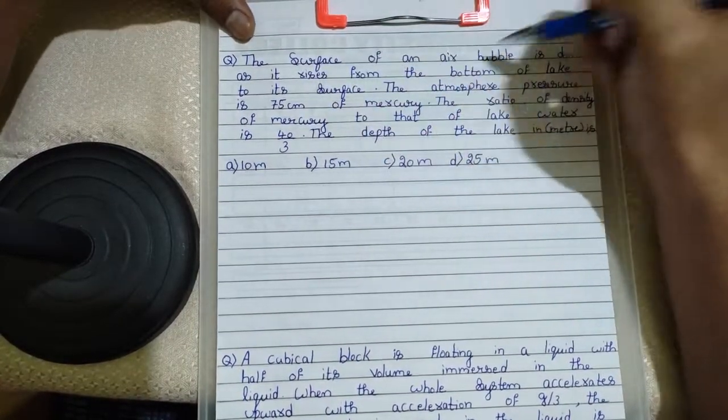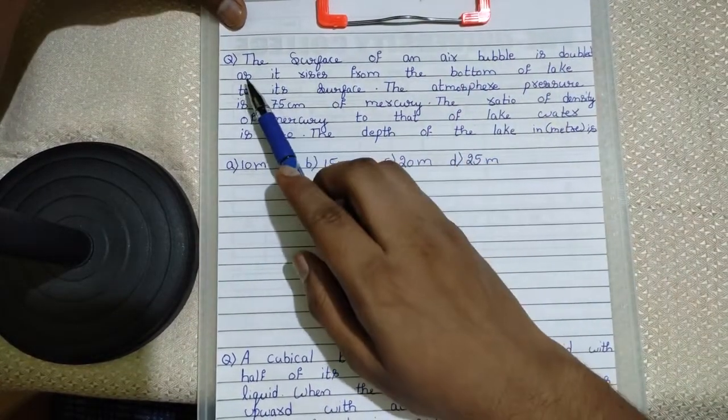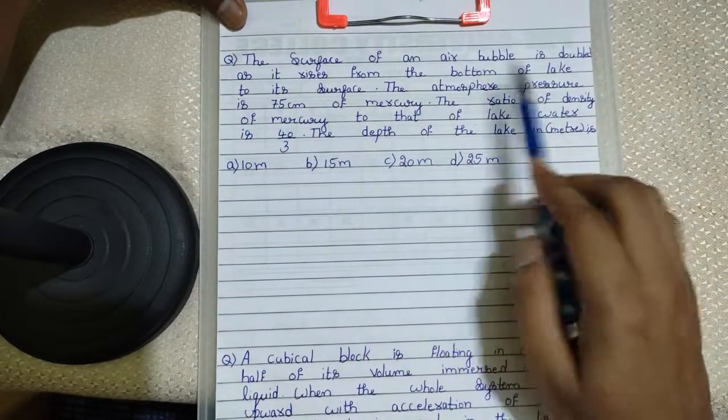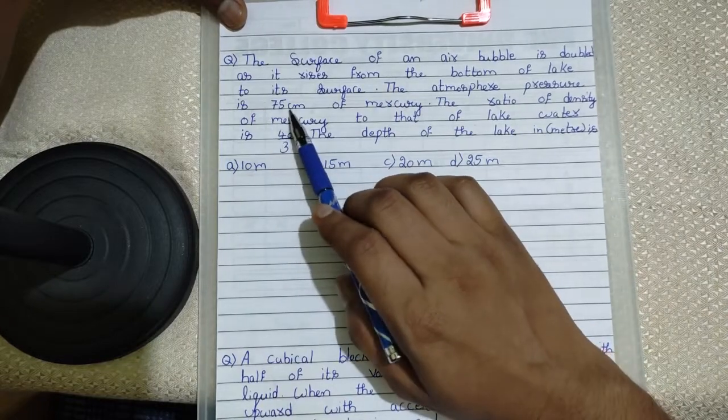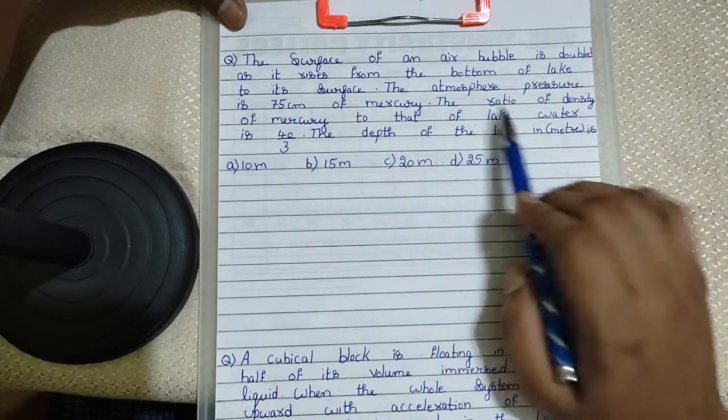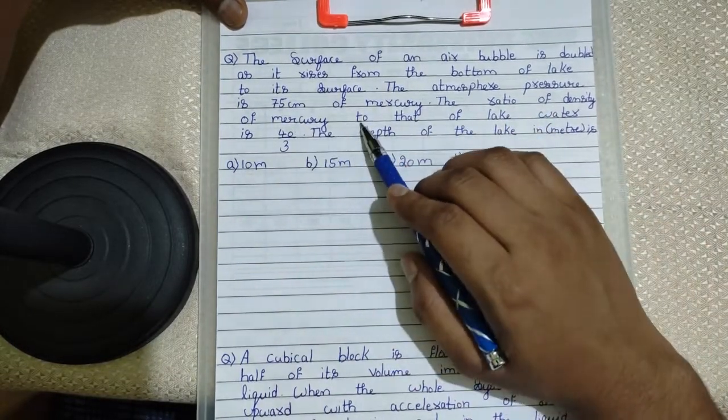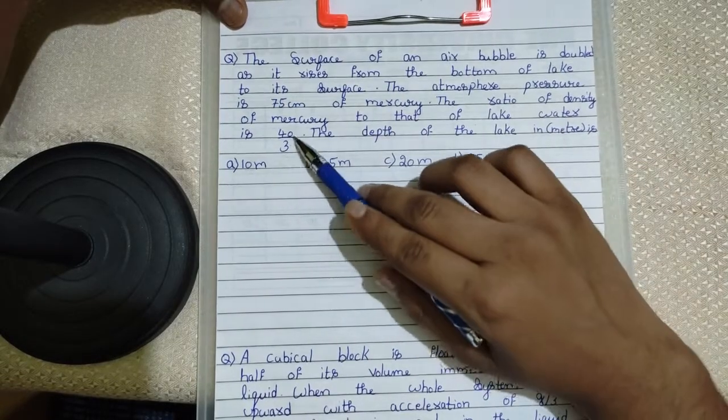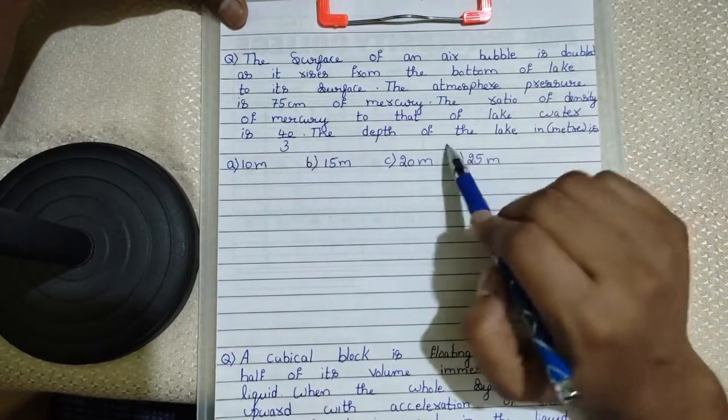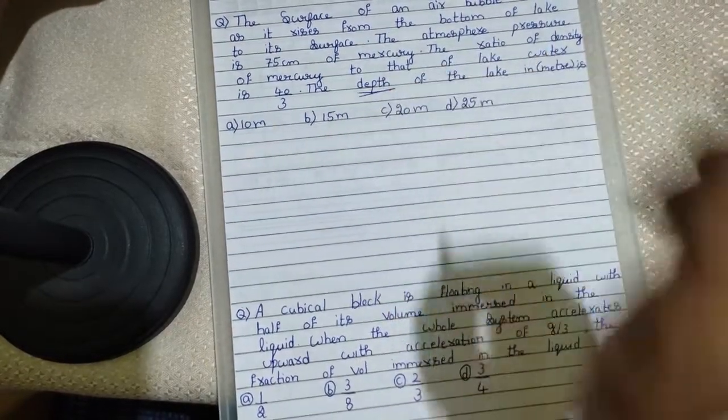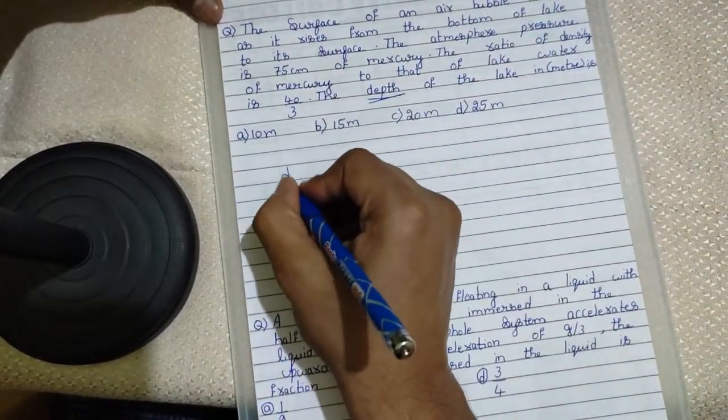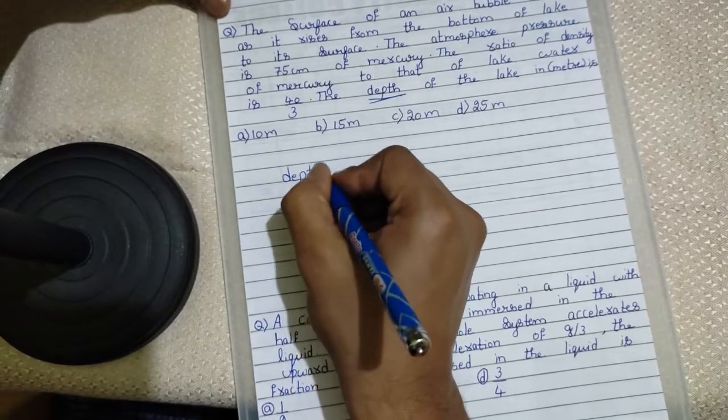The surface of an air bubble is doubled as it rises from the bottom of the lake to its surface. The atmospheric pressure is 75 cm of mercury. The ratio of the density of mercury to that of the lake water is 40 by 3. The depth of the lake in meters. He is asking us depth. Now we have to calculate depth.